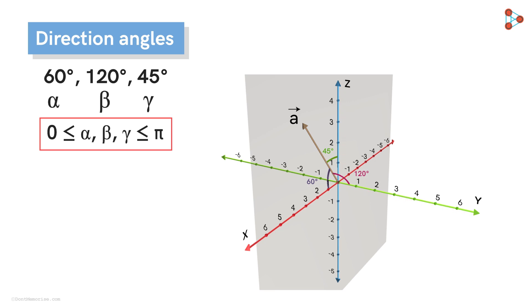Intuitively, you can think of direction angles as a way to represent the direction of a vector in 3D space. From a given set of direction angles, we can tell where a vector is directed.